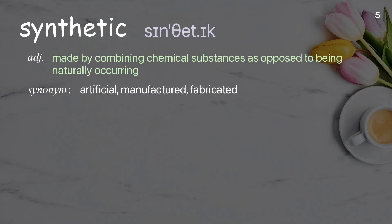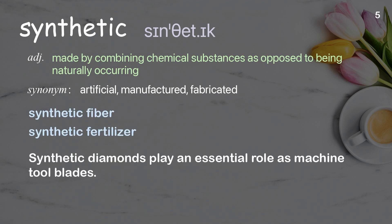Synthetic: made by combining chemical substances as opposed to being naturally occurring. Examples: synthetic fiber, synthetic fertilizer. Synthetic diamonds play an essential role as machine tool blades.